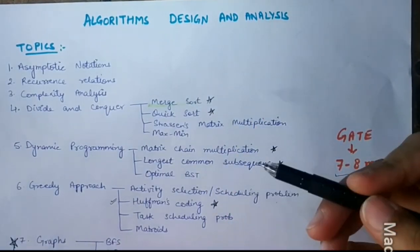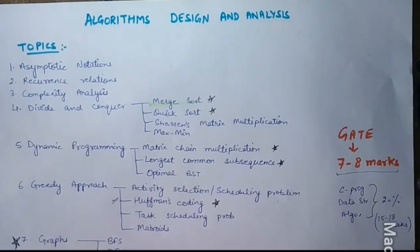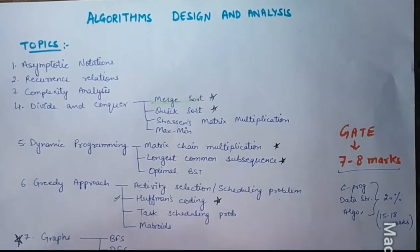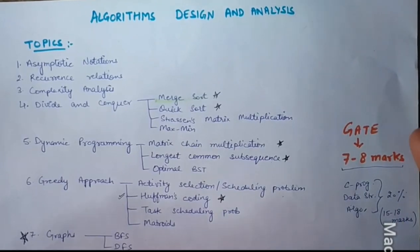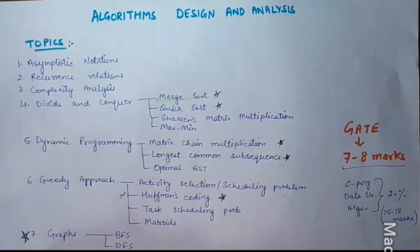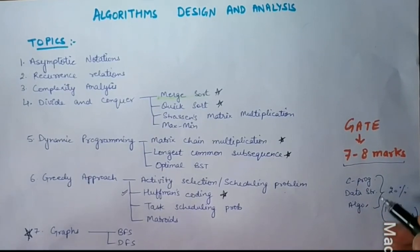Or in some colleges, we also call it as DAA, Design and Analysis of Algorithms. Now, the most important thing is, if we look at this subject, where do we get this subject? In programming, we have three subjects: C Programming, Data Structure and ADA.